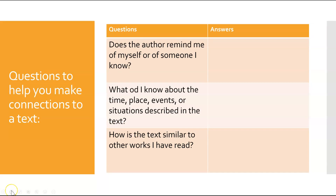Questions to help you make connections in a text: Does the author remind me of myself or someone I know? — that's a text-to-self connection. What do I know about the time, place, events, or situations described in the text? — that's text to world. And how is the text similar to other works I have read? — those are text-to-text connections. Some of you already make these connections naturally when we read, like saying 'we read something like this last year.' Using a chart can help you make those connections, or at least write down the questions you ask yourself.